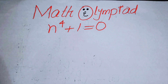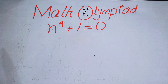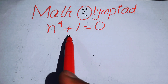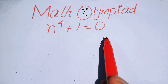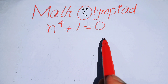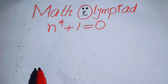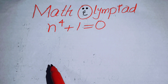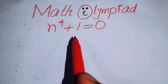Hello everyone, welcome back to the Map of Mathematics. In this video we are going to solve this nice algebra problem: n to the power of 4 plus 1 is equal to 0, and we will solve this problem for the values of n. In this question, I can find all the fourth roots of n.